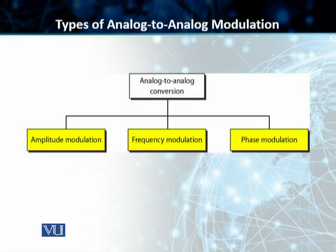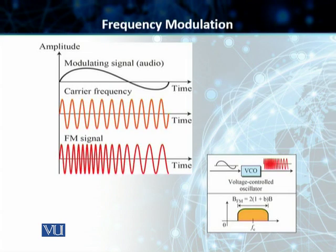Students, the second modulation technique we have is frequency modulation. In this particular case, you have a modulating signal, which is, for example, audio. Then we have a carrier frequency, produced by a voltage control oscillator. We are talking about frequency modulation, and that's why it's the case.